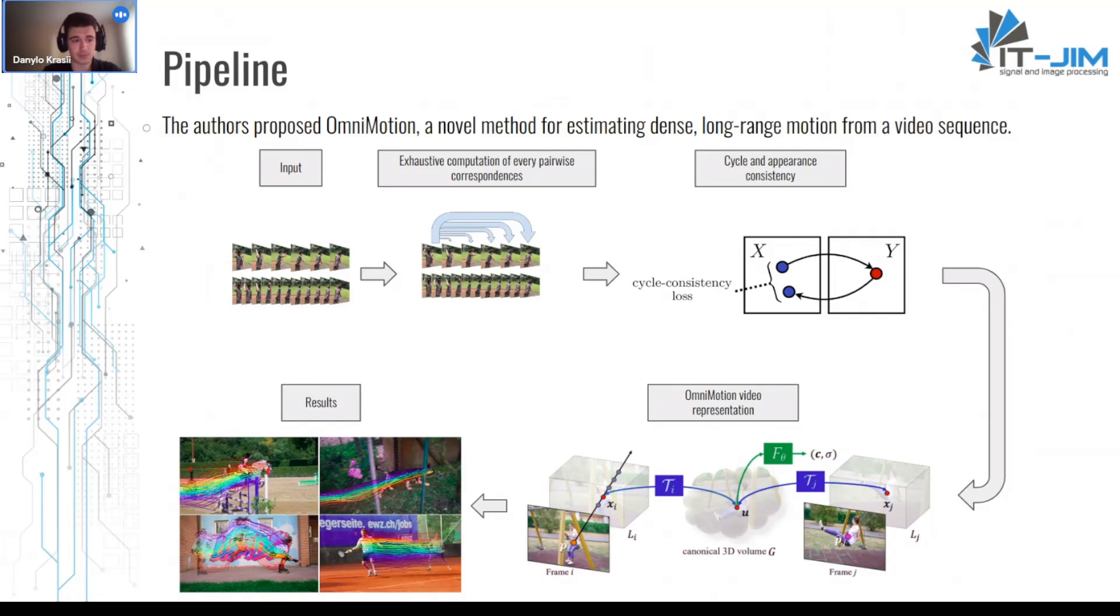So the authors used cycle consistency and appearance consistency check to filter those errors. And next using those inputs the authors represent the scene in the video as a canonical 3D volume that is mapped to local volumes for each frame through local canonical bijections. Local canonical bijections are parameterized as neural networks and capture both camera and motion without disintegrating the two. The video can be considered as a rendering of the resulting local volume from a fixed static camera, but the resulting representation is not a physically accurate 3D scene but as some sort of quasi-3D representation. And once the optimization is done we can now track all pixels even while they are occluded.